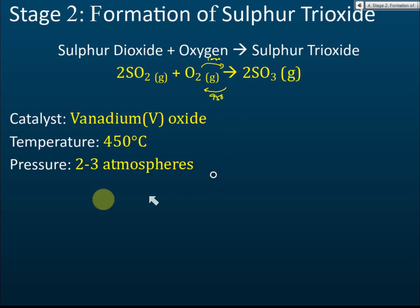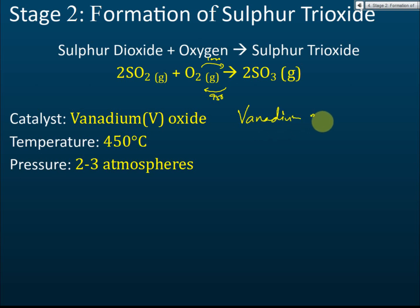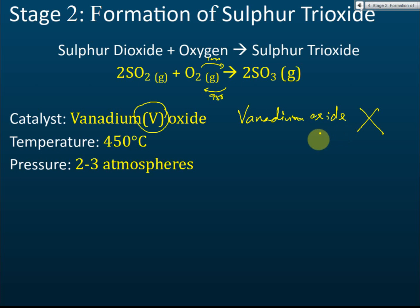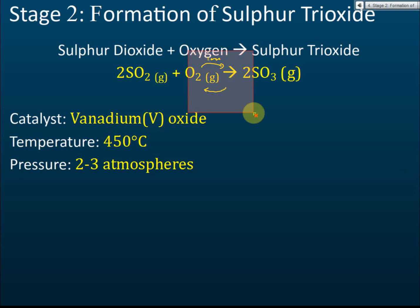In the exam, they may ask what catalyst is used. The catalyst is vanadium(V) oxide. Important: if you write just 'vanadium oxide' you will get no marks — you must include the 'five'. The formula is V₂O₅. The only way to handle this is to memorize it — the catalyst used is vanadium(V) oxide, V₂O₅.